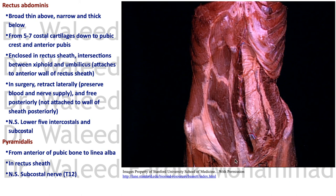Another muscle within the rectus sheath is the pyramidalis, which arises from the front of the pubic bone and inserts into the linea alba. It tenses the linea alba and has its own nerve supply from the subcostal nerve, T12.